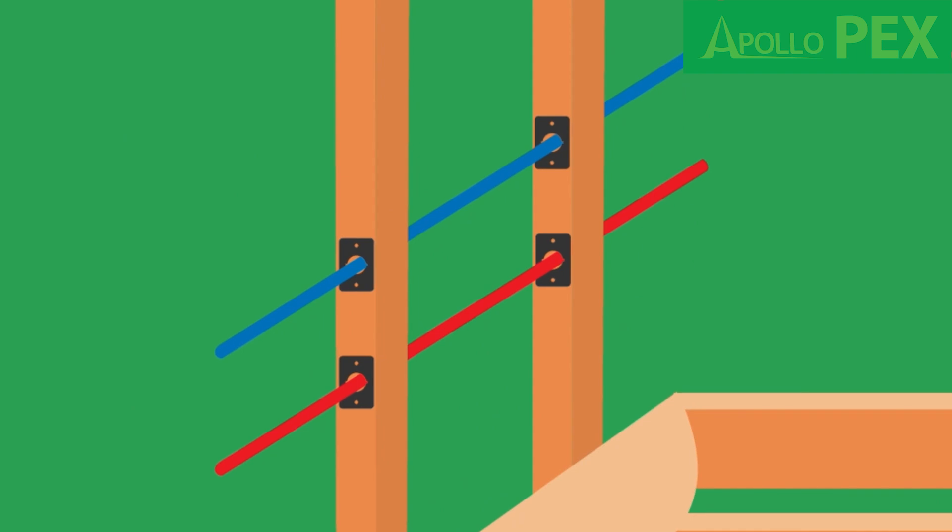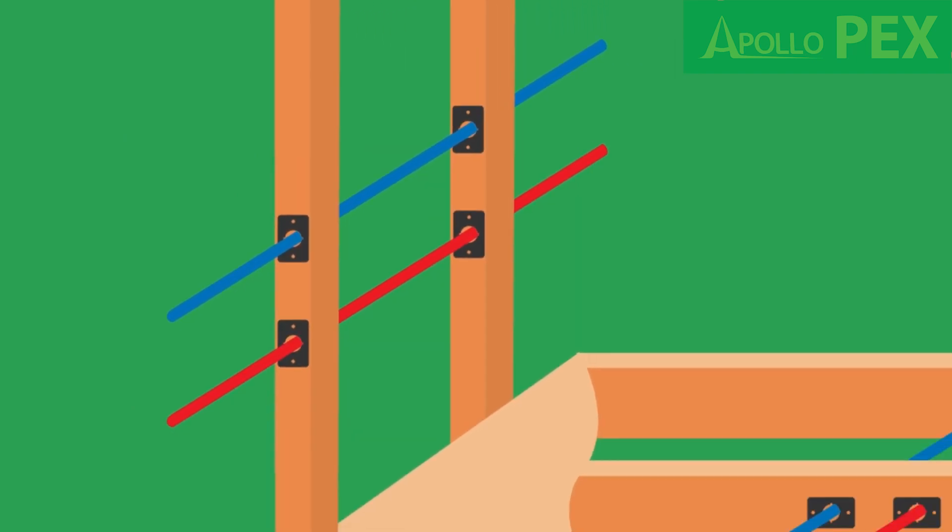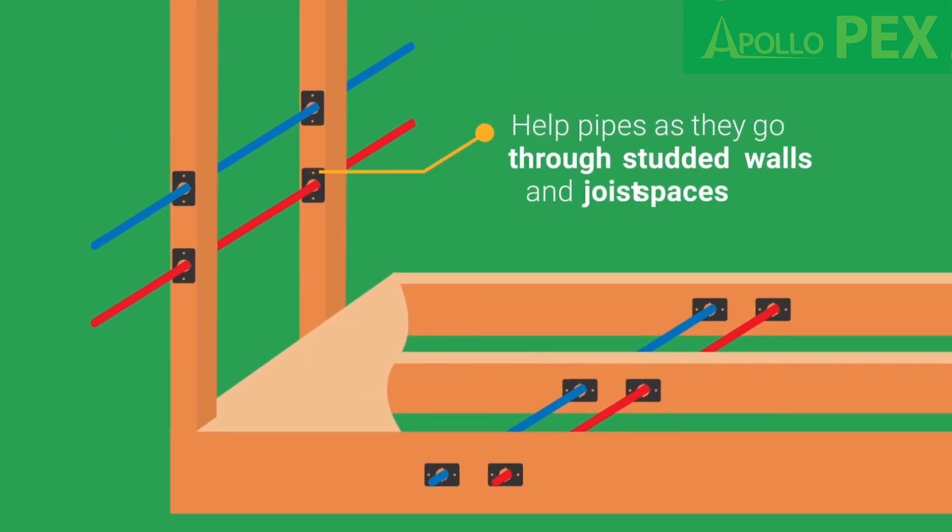Even though the device was created to help pipes as they come up through the floor, it can also be used to help pipes as they go through studded walls and joist spaces.